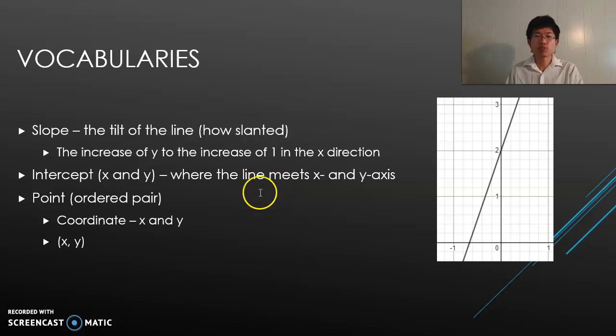The next word is intercept. It's the point where the line meets the x and y axis. X-intercept is where the line meets the x-axis right here, and the y-intercept is where the line meets the y-axis, the vertical line on the zero.